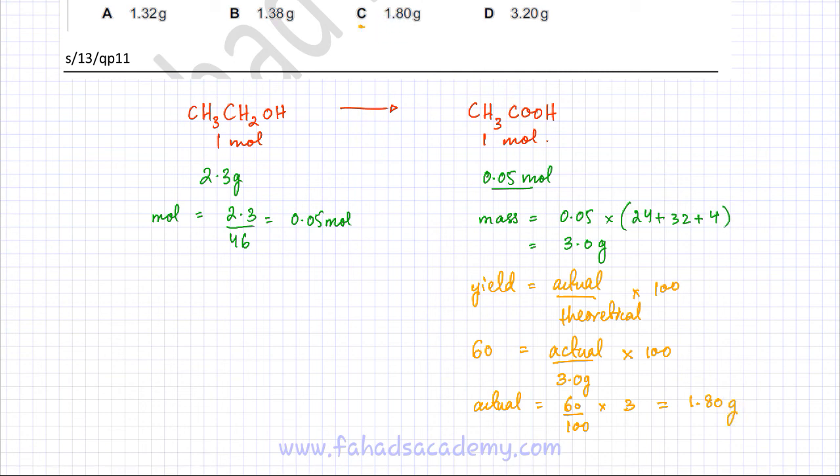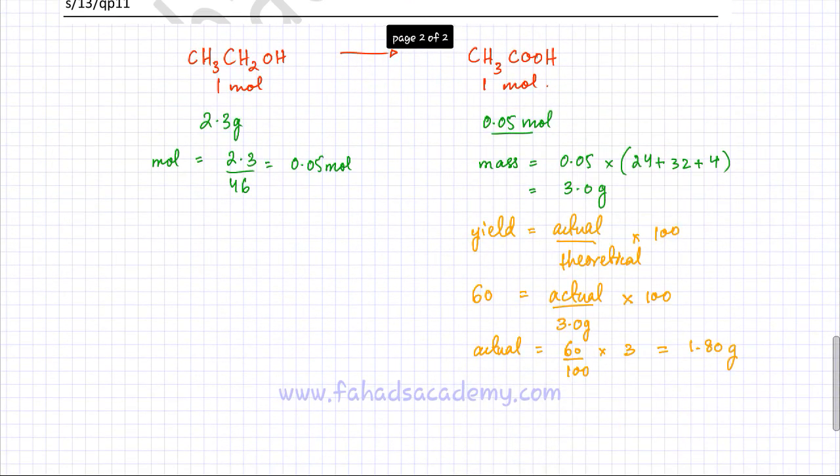So option C would be correct. Remember, if somebody talks about yield being 60%, then whatever the theoretical value you're getting, your actual value would be 60% of that value. So it's 60% of 3 grams, or you can use the yield formula to find the answer. The final answer is 1.8 grams, not 3 grams.